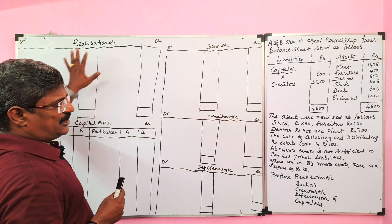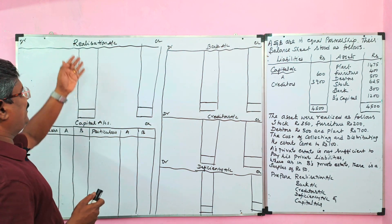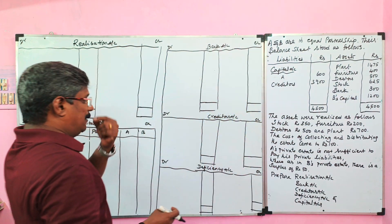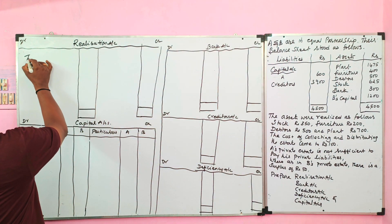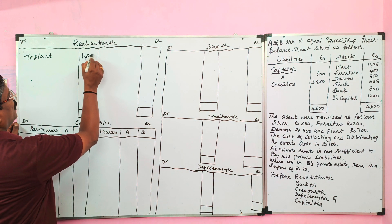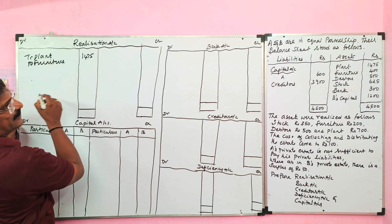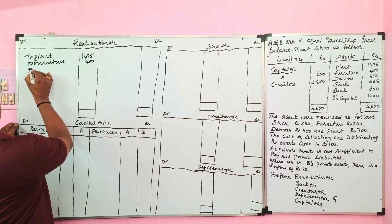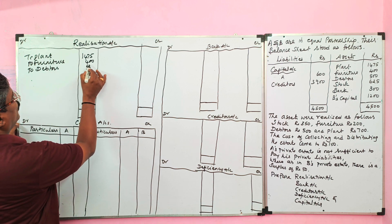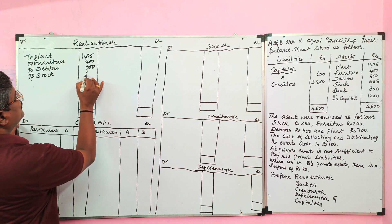Now I am going to prepare the realization account first. We should transfer all assets to the realization account at book value — the values given in the balance sheet. Realization account is debited to: plant ₹1,475, furniture ₹400, debtor ₹500, stock ₹625.